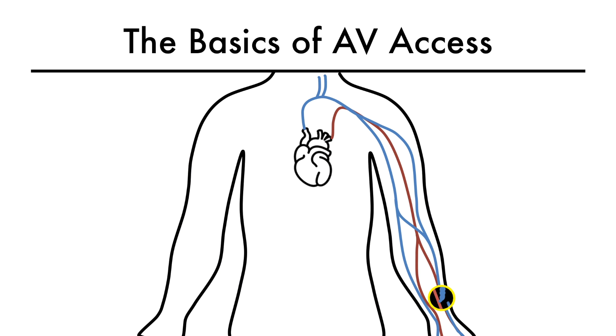Remember, a dialysis axis is not just about anastomosis between a vein and an artery. It's a closed circuit starting at the heart and ending at the heart.